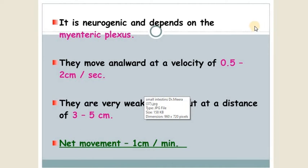Peristalsis is a neurogenic contraction and depends upon the myenteric plexus. They move towards the anal direction with a velocity of 0.5 to 2 cm per second. They are very weak contractions and at 3 to 5 cm distance, they die out.